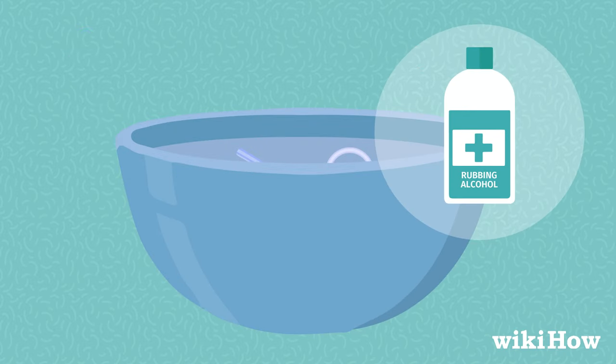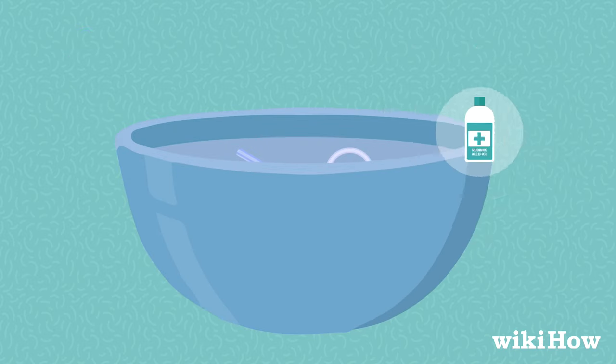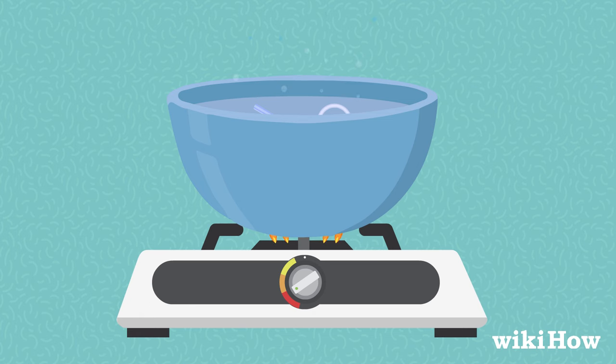Soak your needle and jewelry in rubbing alcohol. Then boil it in hot water to sterilize it.